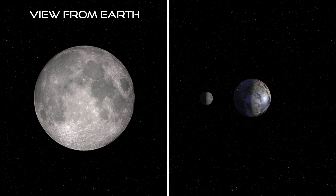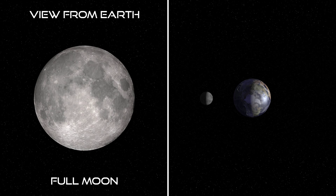When the Moon reaches the halfway point in its orbit around the Earth, we will see a full Moon. All of the Moon's surface is visible from our Earth viewpoint. The Moon and Sun are now on opposite sides of the Earth. As the Sun sets in the west, the full Moon will rise in the east.